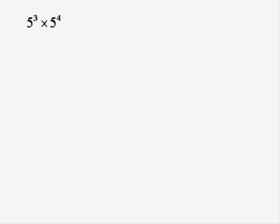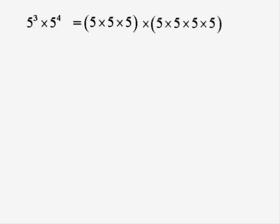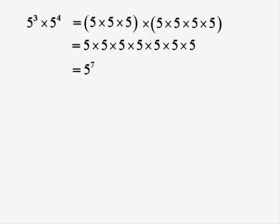Let's start off by looking at two sets of indices multiplied. You've got 5 cubed, or 5 to the power of 3, times 5 to the power of 4. Well, 5 to the power of 3 is 3 fives all multiplied, and 5 to the power of 4 is 4 fives all multiplied. So if you're multiplying the two, it's all those multiplications together — in total we've got 7 fives all multiplied, so we could rewrite that as 5 to the power of 7.